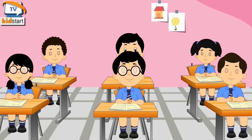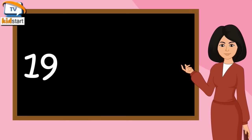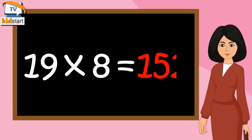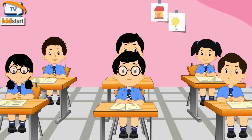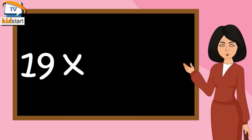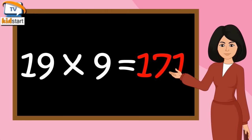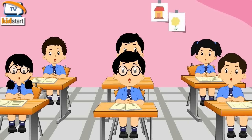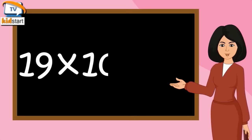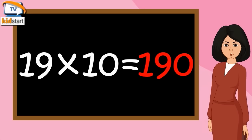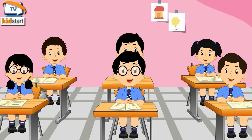19 eights are 152. Nineteen nines are 171. Nineteen tens are 190.